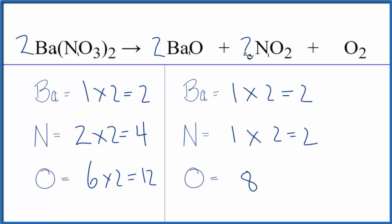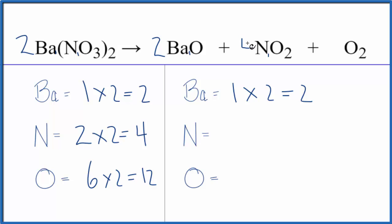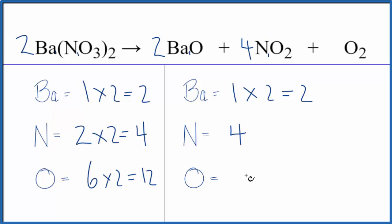It looks like if we change the coefficient of NO2 from two to four, that would balance the nitrogens and maybe the oxygens too. Putting a four in front of NO2: one times four gives us four nitrogens — balanced. For oxygens: two times one is two, four times two is eight, plus the two from O2 — two plus eight plus two equals twelve total oxygen atoms. That balances the oxygens as well.